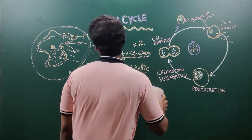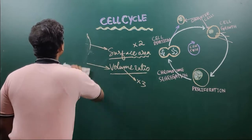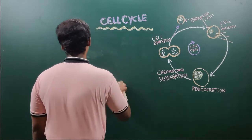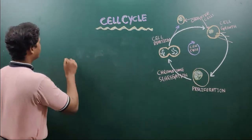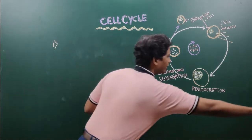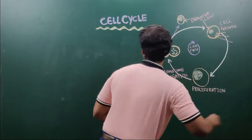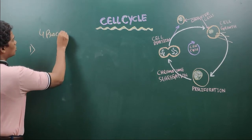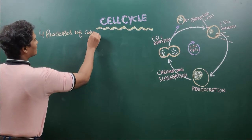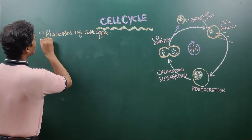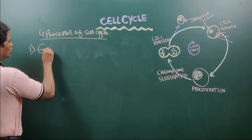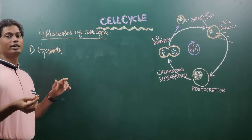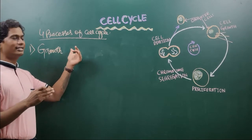To understand the four phases of cell cycle, the cell shows four processes. The first process is growth — growth means increase in size, both in volume ratio and in surface area. If those two increase, that is called growth.